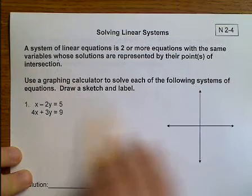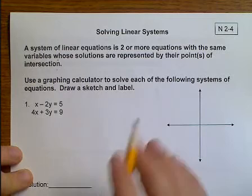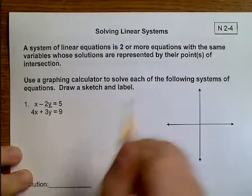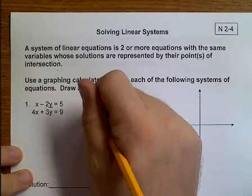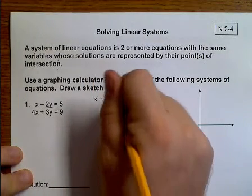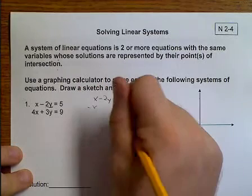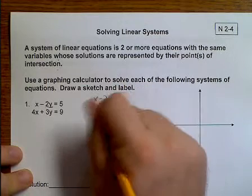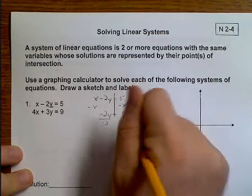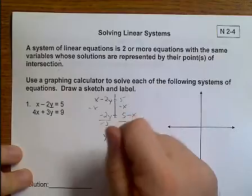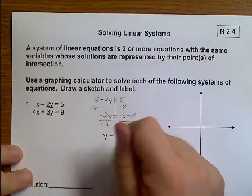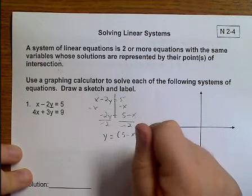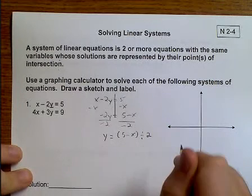We can go ahead and use the graphing calculator to solve these. In order to do that, I need to solve them for y so I can put them into the graphing calculator. So x minus 2y equals 5. Let's get the x moved to the side. Negative 2y equals 5 minus x. Divide everything by negative 2. y equals 5 minus x in parentheses divided by 2. That can go in the calculator.